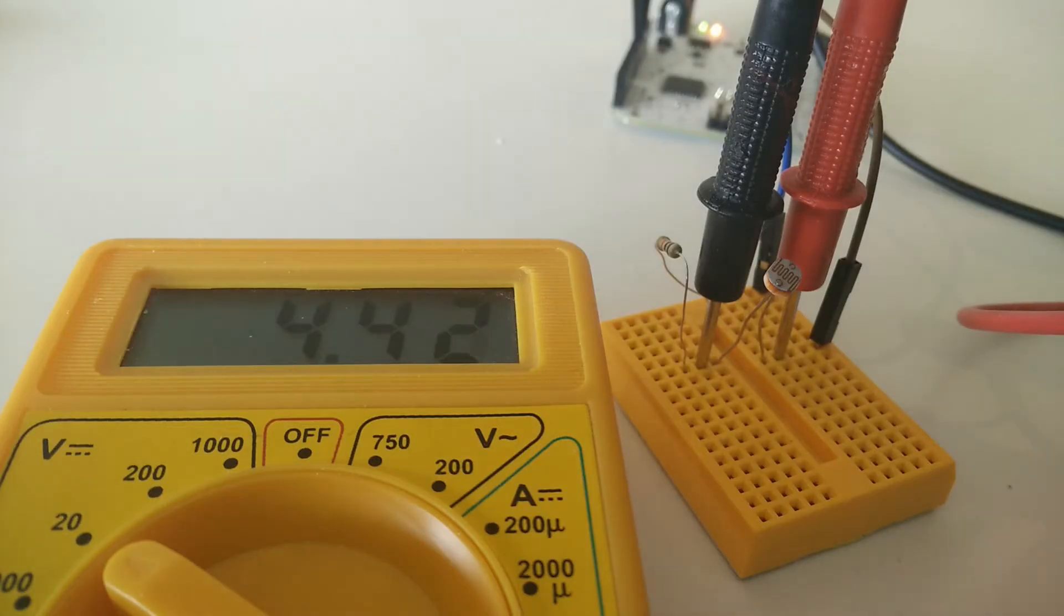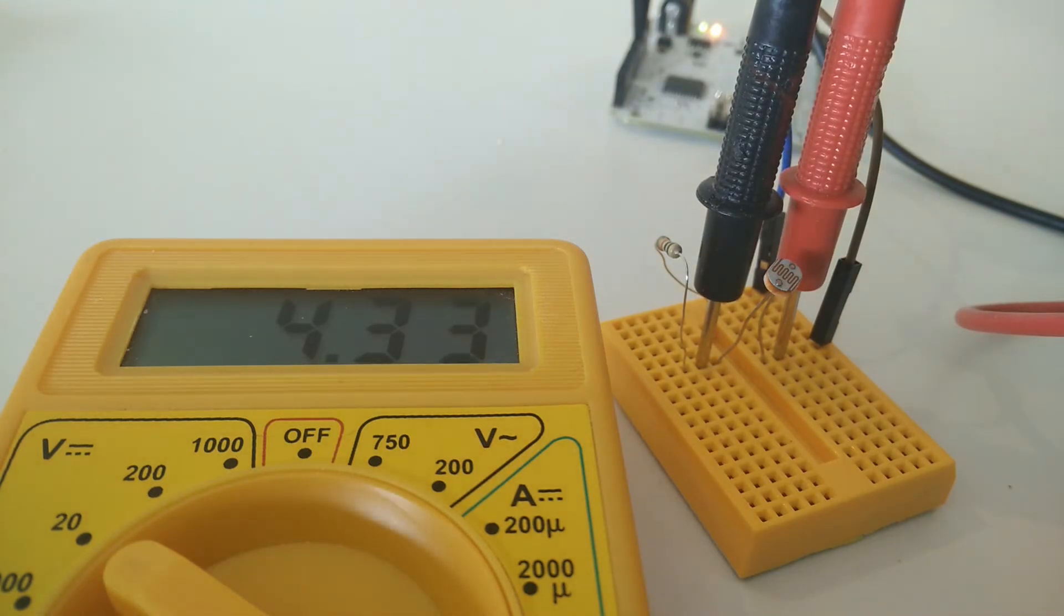The more brightness around it, the less resistance in the component. These sensors are really cheap.